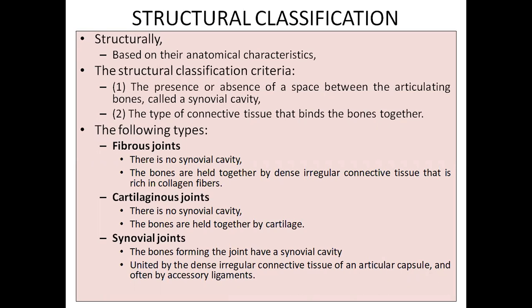The synovial cavity is present between the bones - for example, the shoulder joint. With this cavity, they are having some connective tissue called dense irregular connective tissue. There is one articular capsule. We're going to study in detail about the synovial joint structure - what are these articular capsules and what different structures are present. There are also some accessory ligaments holding the whole structure together.